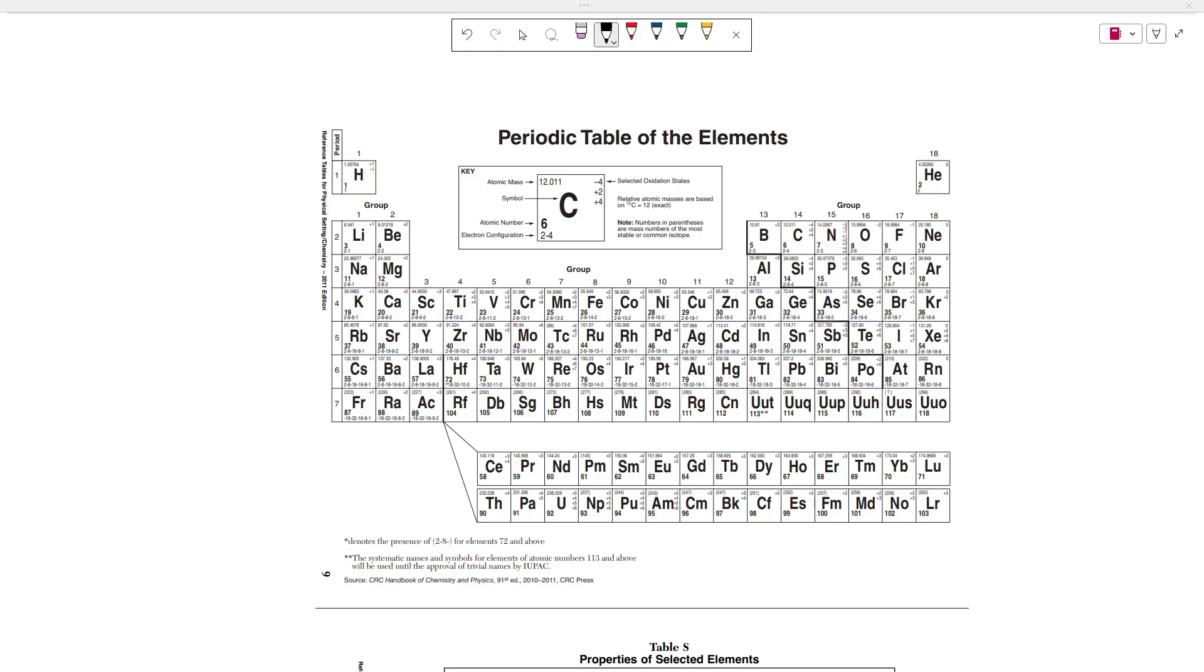This is everything you need to know about metals and non-metals for the chemistry regions in under five minutes. So the periodic table of elements will split up the elements into three major categories.